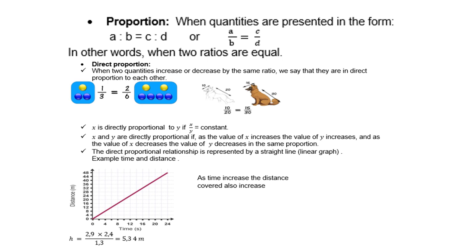In other words, when two ratios are equal. Now let's first look at direct proportion. So when two quantities increase or decrease in the same ratio, we say that they are in direct proportion to each other. For instance, look at 1 third is the same as 2 over 6. We can all agree with that.